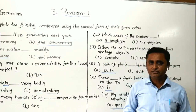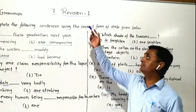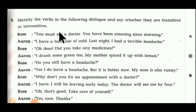Now, remaining exercises we have to do. This is a type of revision for you. As you learned in earlier lessons, you have to revise here in lesson number 7, revision 1. Now, students, we have to do exercise B. In our previous screen we completed exercise A. Exercise B — identify the verbs in the following dialogue and say whether they are transitive or intransitive.